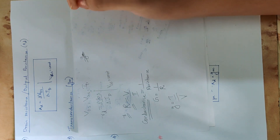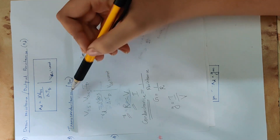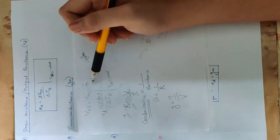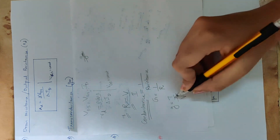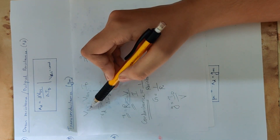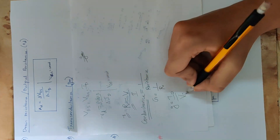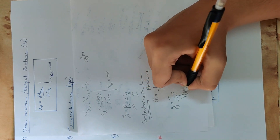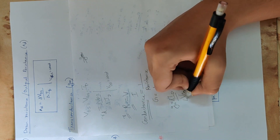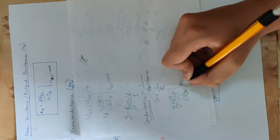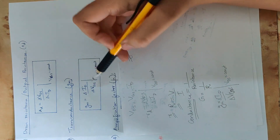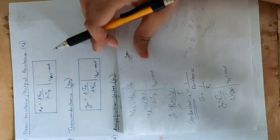The next parameter is transconductance. Transconductance relates quantities from two different terminals — it is current divided by voltage, where the current is the drain current ID and the voltage is the gate-source voltage VGS. So transconductance Gm equals delta ID divided by delta VGS when VDS is kept constant.